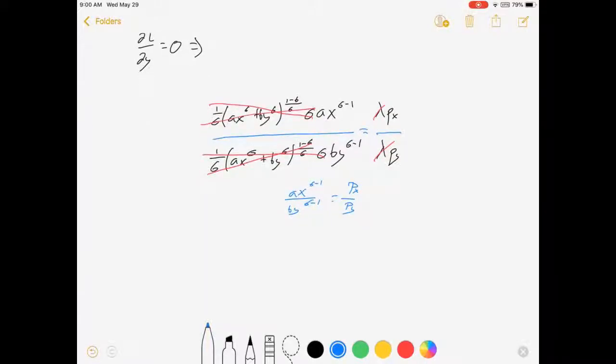And I am just left with ax^(σ-1) over by^(σ-1) equals px over py. And that's a much nicer equation to look at. I'm going to simplify it a little bit. I'm going to solve for x. I'm going to skip a step in the interest of time. I suppose you will be able to replicate this part. I'm not doing any fancy tricks.